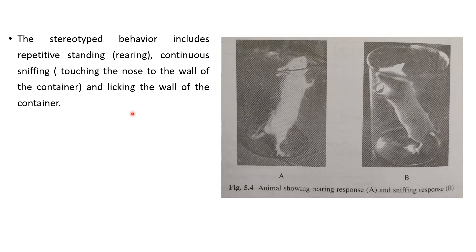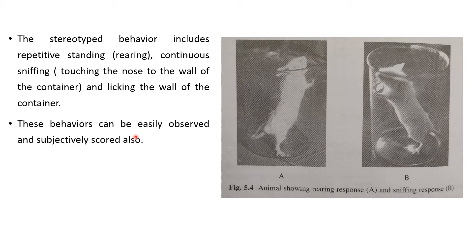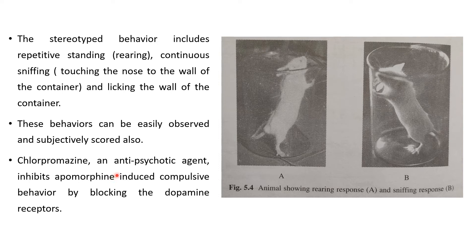The stereotypy behavior includes repetitive standing (rearing), continuous sniffing — touching the nose to the wall of the container — and licking the wall of the container. As seen in the diagram, when the animal shows stereotypy behavior, it stands in the beaker continuously or continuously touches its nose to and licks the wall of the container. This behavior can be easily observed and subjectively scored. Chlorpromazine, an antipsychotic agent, inhibits apomorphine-induced compulsive behavior by blocking dopamine receptors.